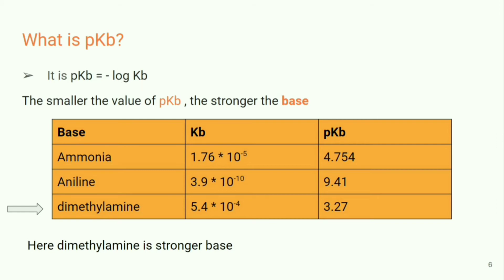So how does a pKb value look? The Kb values are typically expressed in scientific notation — for example, for ammonia it is 1.76 × 10⁻⁵, and similarly for aniline and dimethylamine they are in the order of 10⁻⁵, 10⁻¹⁰, 10⁻⁴, etc. But pKb is just a simple number — something like 4.something, 9.something, 2.something, 1.something — making it much easier to handle.